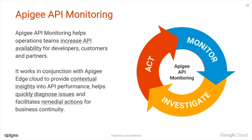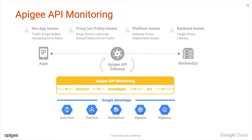What is Apigee's API monitoring all about? At a very high level, it helps operational teams increase API availability for their developers, customers, and partners. This capability is very deeply integrated into the Apigee Edge platform — that's a very important point — because through that we're able to provide contextual insights into API performance, help customers quickly diagnose issues, and facilitate remedial actions for business continuity. It really enforces the monitor, investigate, and act paradigm.